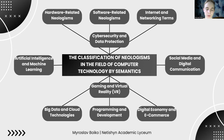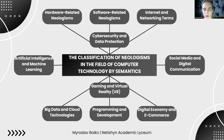Internet and networking terms define concepts related to online communication, connectivity and data transfer — for example, Wi-Fi, streaming or cyberspace. Cybersecurity and data protection terms relate to digital security and privacy — like firewall, phishing, ransomware or VPN (virtual private network). Artificial intelligence and machine learning neologisms describe emerging AI technologies and automated systems — such as deep learning, neural network, chatbot or algorithm bias.